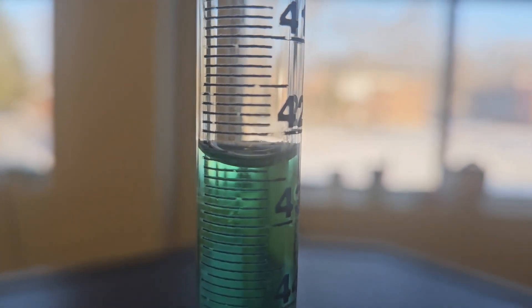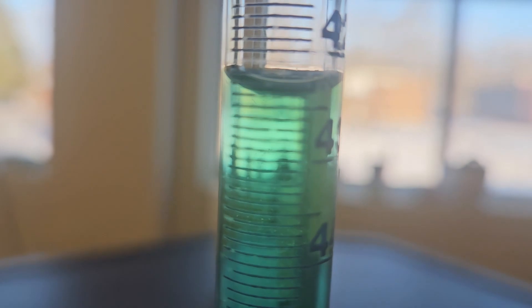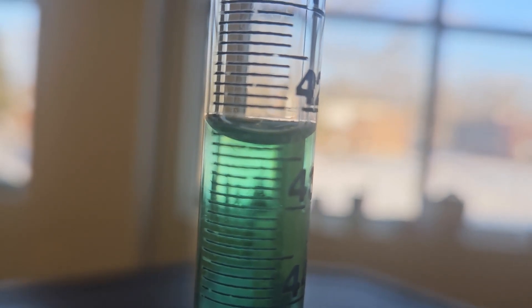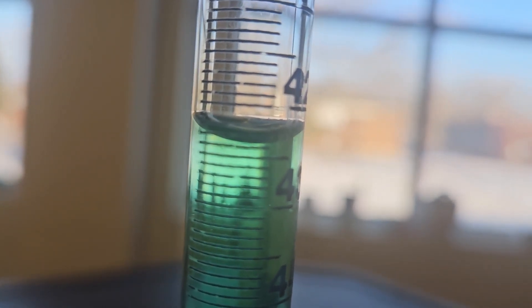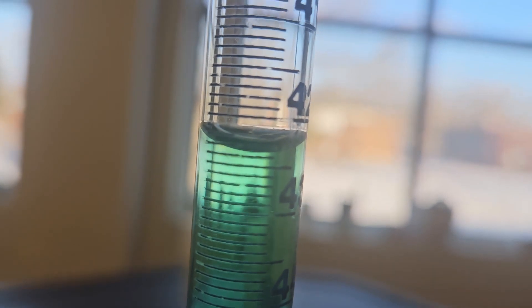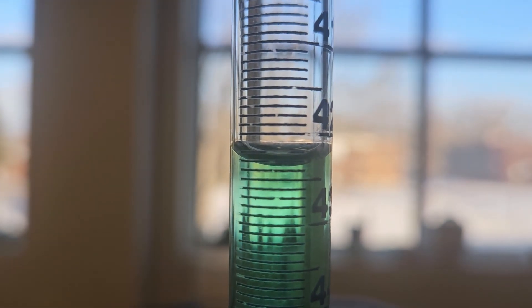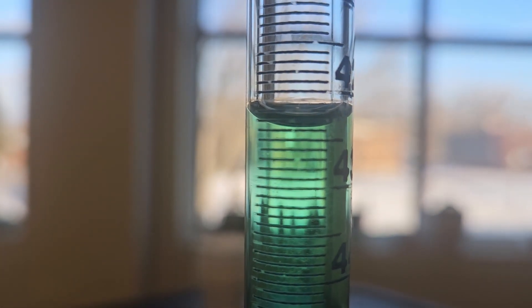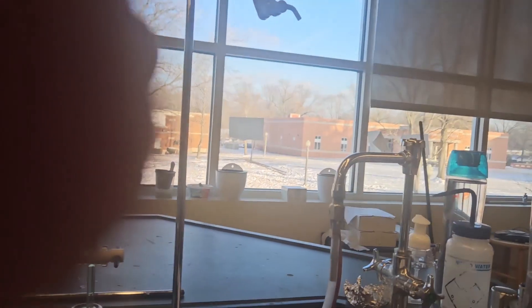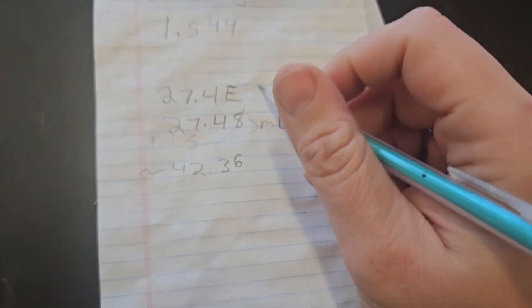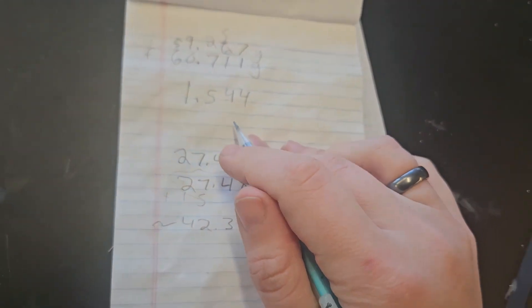Once again, that's 42, that's 42.5, that's 42.4, and that's 42.3. The meniscus is right at, I'd say 42.36. So I went to 42.36. So now the last thing I need you to do before you dispose of this is to do a quick calculation.